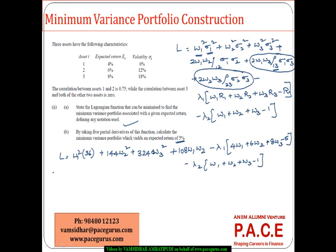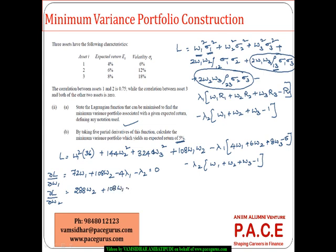Now I can take the partial derivatives with respect to W1 equated to 0: that gives 72W1 — since 2W1 times 36 is 72W1 — plus 108W2, minus 4 lambda 1, minus lambda 2, all equal to 0. Similarly, taking the partial derivative with respect to W2: 288W2 plus 108W1 minus 6 lambda 1 minus lambda 2 equals 0.